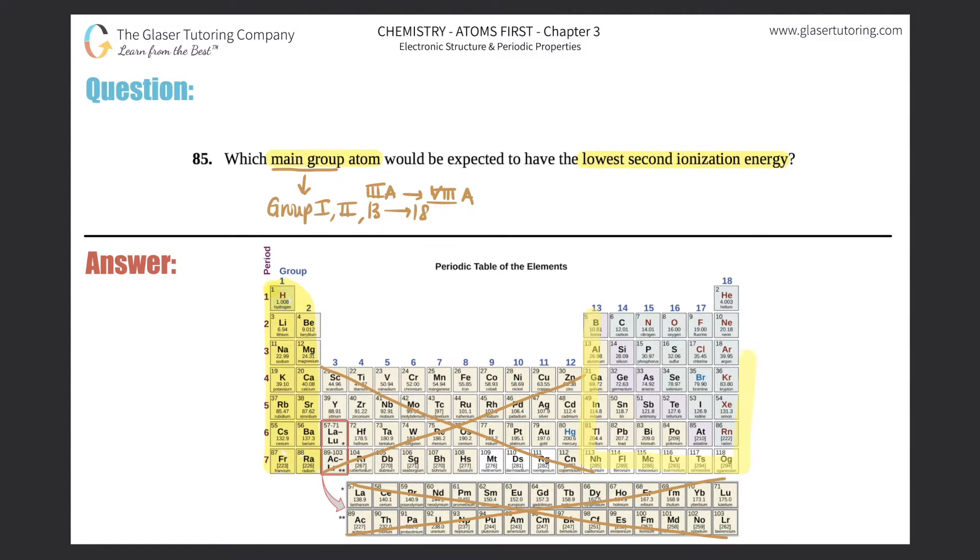Which atom is it? They want to know specifically what atom has the lowest second ionization energy. We should know the trend: as you go across a period, your ionization energy (IE) will increase, and as you go down a group, your ionization energy should decrease.